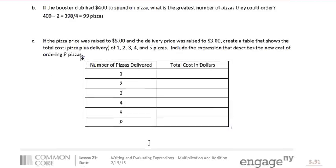If the pizza price was raised to $5 and the delivery price was raised to $3, let's create a table that shows the total cost now. So if there's 1, it would be 5 plus 3, which is 8. For 2, it would be 10 plus 3, which is 13. For 3, it would be 15 plus 3, which is 18. For 4, it would be 20 plus 3, which is 23. For 5, it would be 25 plus 3, which is 28.